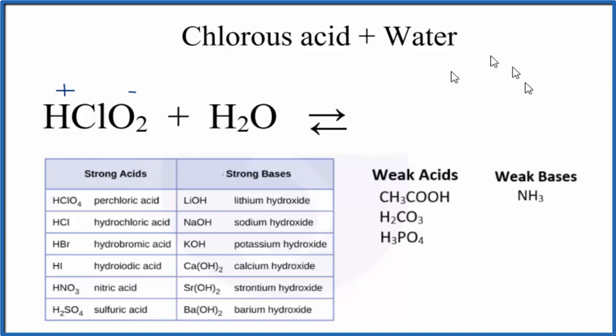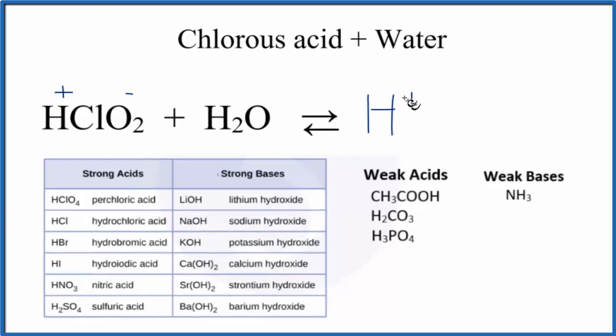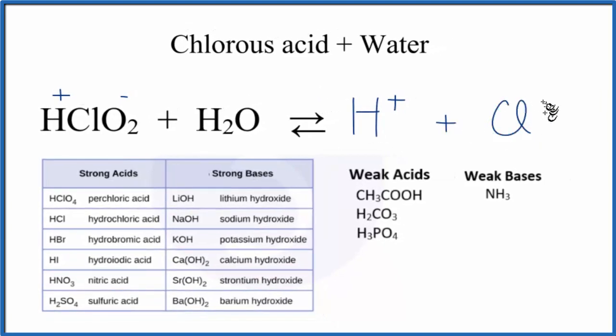Some of it will break apart, and then some of it will come back together, and they'll go back and forth, but it'll be at equilibrium for that temperature. So we'll have H+ and then ClO2-.